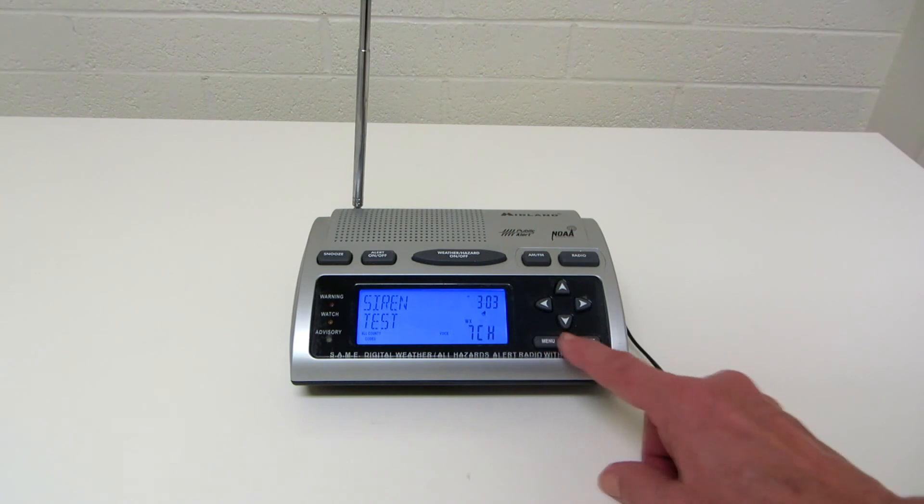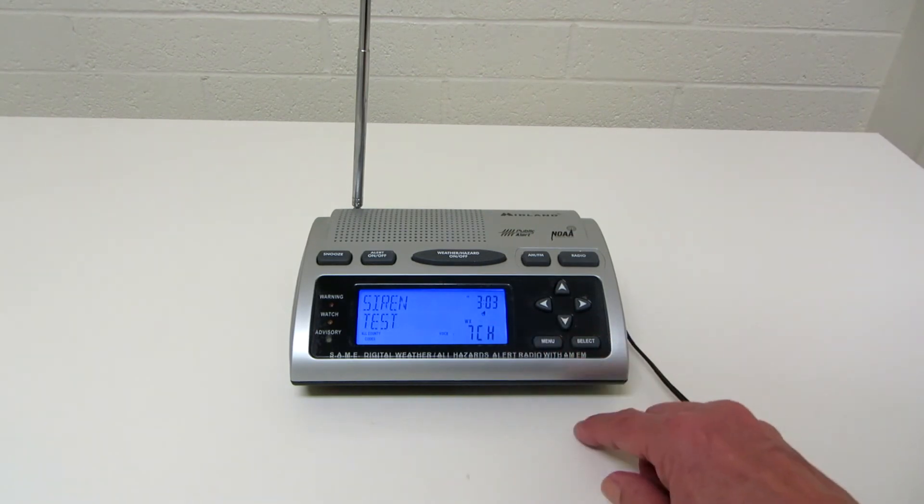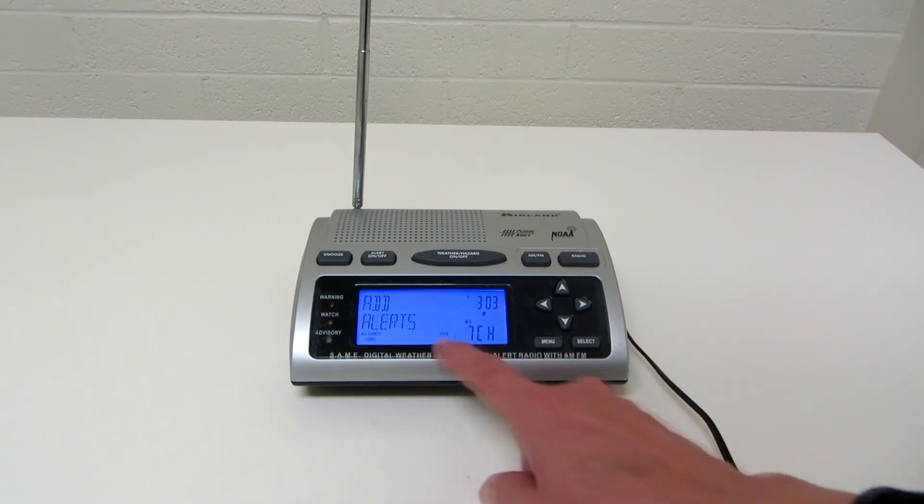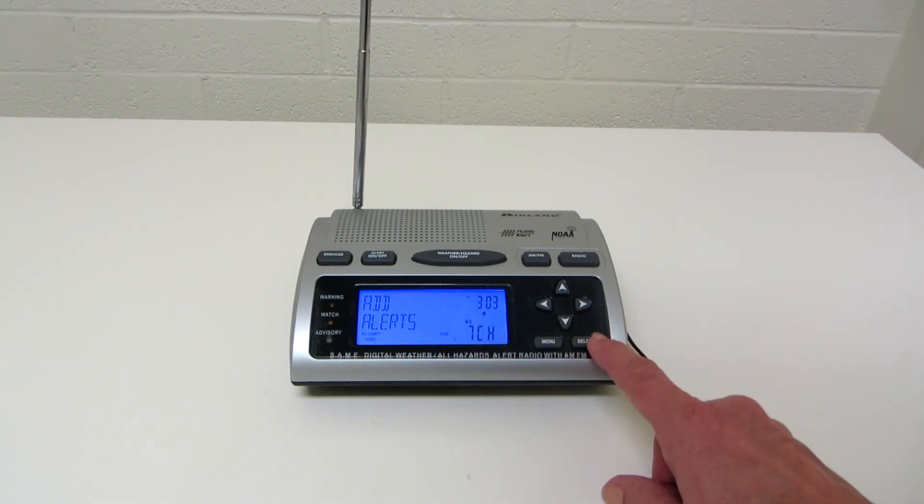The next option is to test the siren, so you push it and now I know that's what it's going to sound like. Then we can add alerts—you can go through all the county codes, you can do all kinds of things. You need to look specifically in the guide for your particular area and the things that you want.